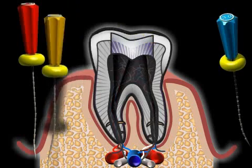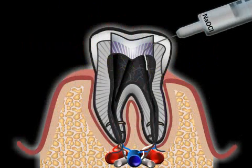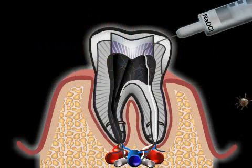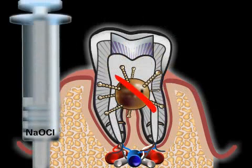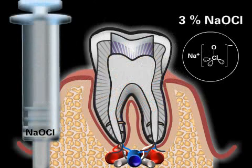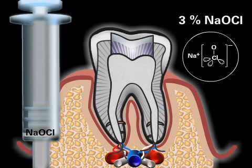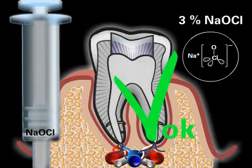Rinsing with sodium hypochlorite not only removes dentin chips but kills bacteria as well. But in order to do so, the canals must be rinsed for a sufficient period of time. Furthermore, the solution should have a specific concentration. If using a 3% sodium hypochlorite solution, germs are killed after a sufficiently long exposure time, usually about 3 minutes. But the bone at the root end is not damaged.